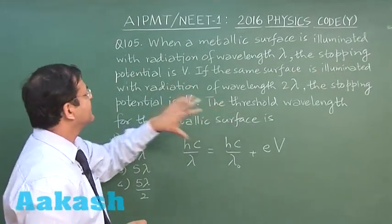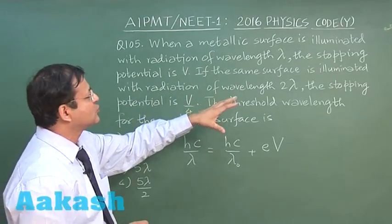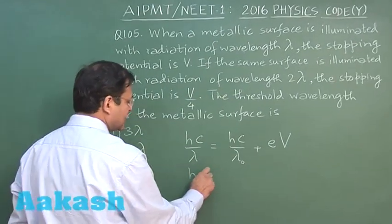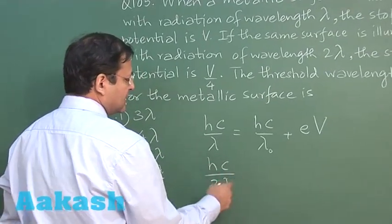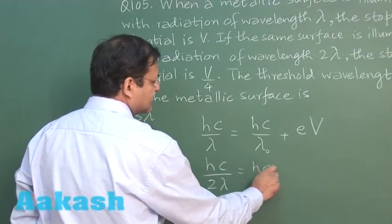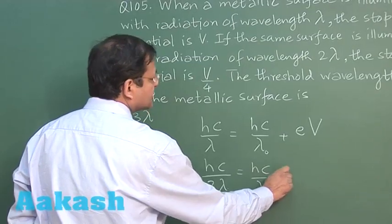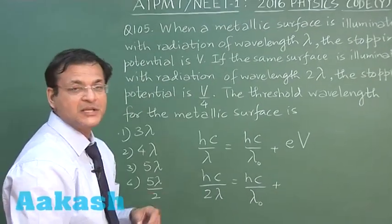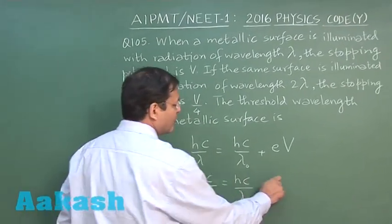Now it says that if the same surface is illuminated with radiation of wavelength 2 lambda, so this time the wavelength has been increased, stopping potential will be reduced. This will remain same, hc by lambda naught plus this time the stopping potential, you can see it has been reduced, ev by 4, right.